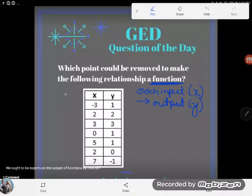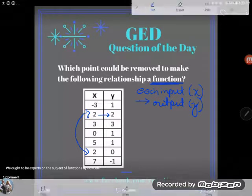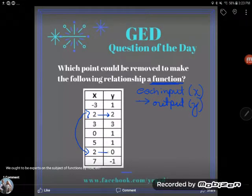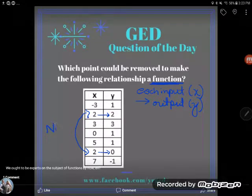But what you're going to notice here on this particular table is that I have a cheating X, as I call it. I have the same X, a two, seeing more than one Y. In this case, when I had an input of two, I had an output of two. But in this case, when I had an input of two, I had an output of zero. And that's what absolutely can't be. So currently, this relationship is not a function.